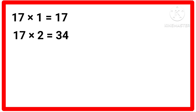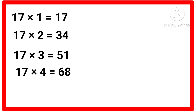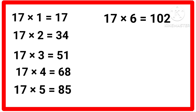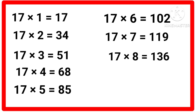Table of 17. 17 ones are 17, 17 twos are 34, 17 threes are 51, 17 fours are 68, 17 fives are 85, 17 sixes are 102, 17 sevens are 119, 17 eights are 136, 17 nines are 153.